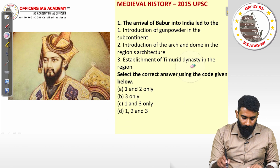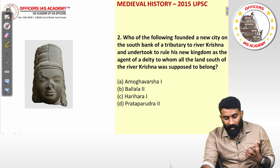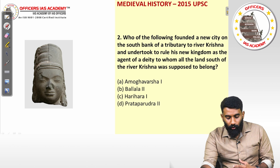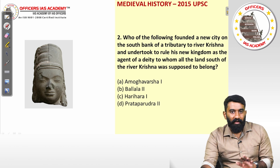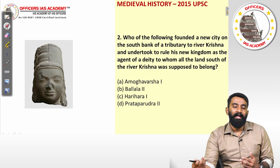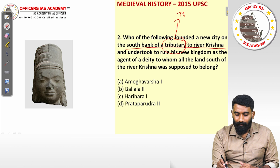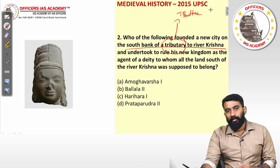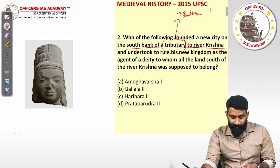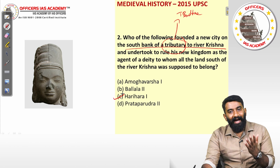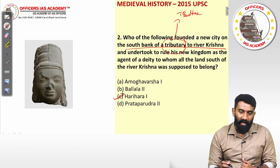Question two: who founded a new city on the south bank of a tributary to the river Krishna and undertook to rule as the agent of a deity to whom all land south of the Krishna was supposed to belong? The tributary referred to is the Tungabhadra. The empire is the Vijayanagara Empire, and the founder is Harihara — along with his brother Bukka. So the answer is option C, Harihara.